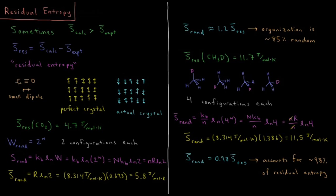So what happens here is at zero Kelvin, CO doesn't form this kind of a perfect crystal. The actual crystal is fairly random in its organization for what's pointing up and what's pointing down. If we calculate the residual entropy of CO, the residual entropy of CO is 4.7 joules per mole Kelvin.